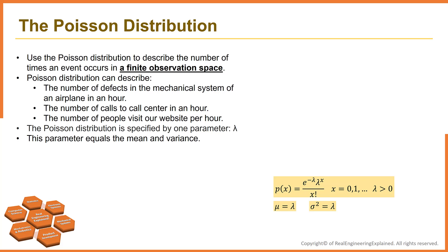The Poisson distribution is specified by one parameter, lambda, and is defined with this formula. Note that the mean and variance of Poisson distribution are both equal to the parameter lambda.